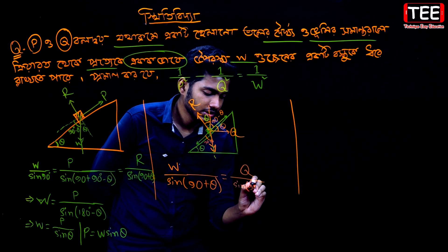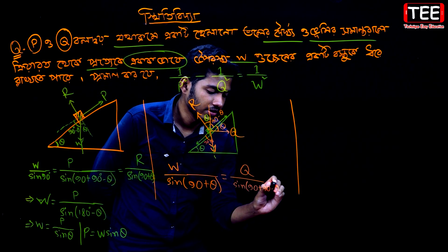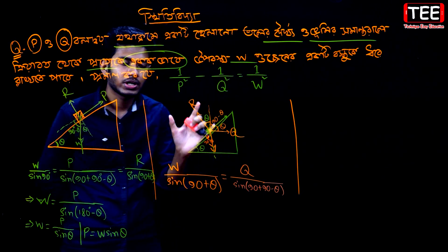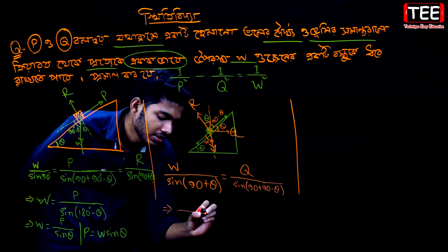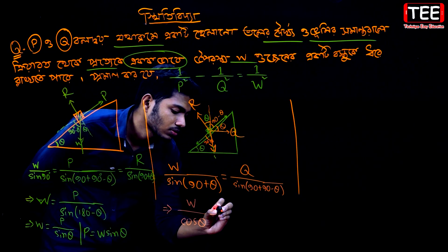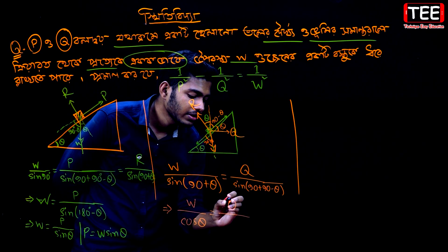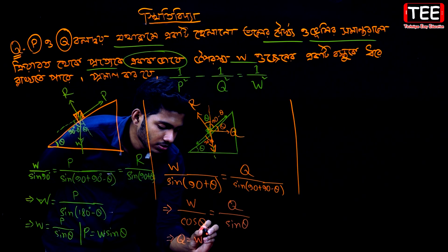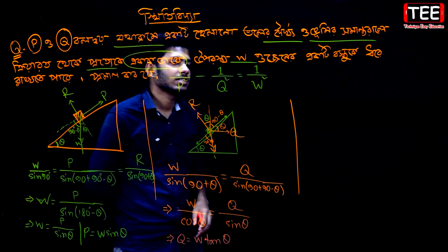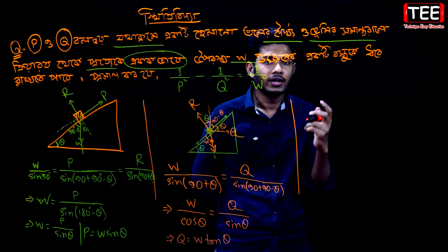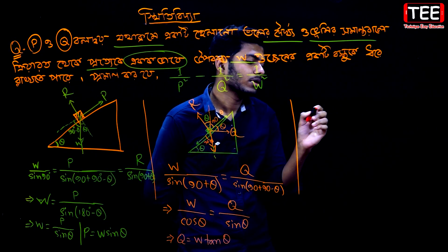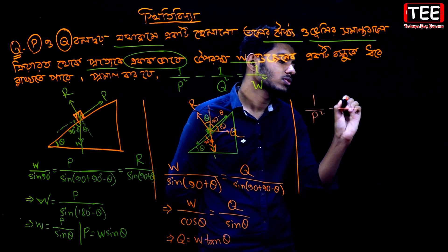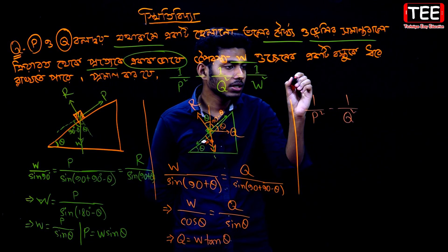At some point: 90 plus 90 minus theta. We are concerned about this reaction force — we are not concerned about the reaction force separately. So we will write that W divided by cos theta is equal to 180 minus theta, that means Q divided by sin theta. So we will say Q is equal to W·tan theta, and P is equal to W·tan theta. This means we will write 1 divided by P squared minus 1 divided by Q squared.